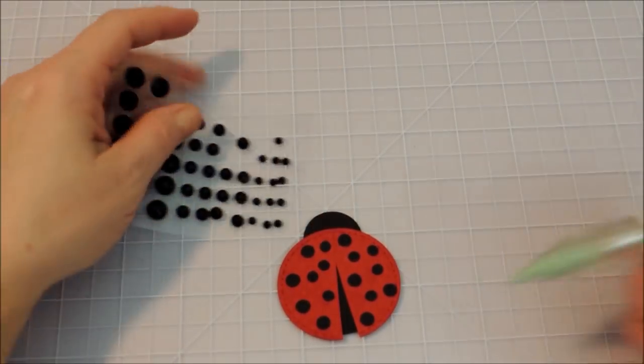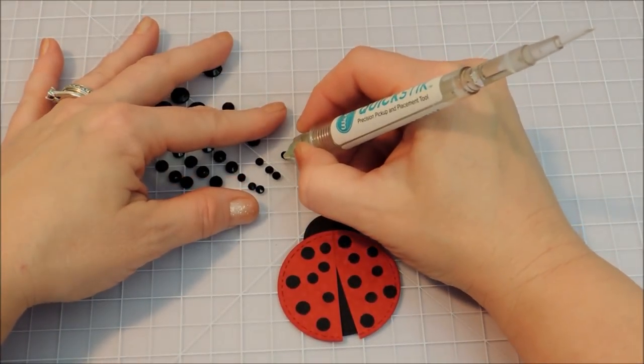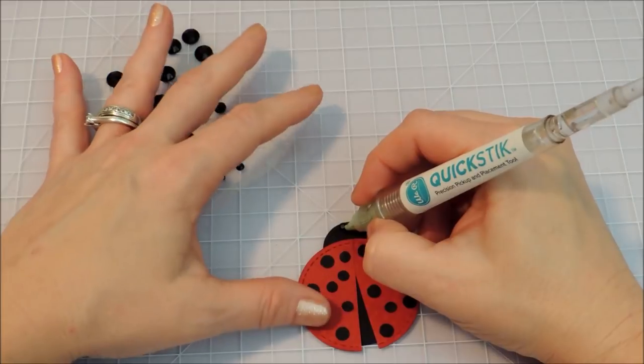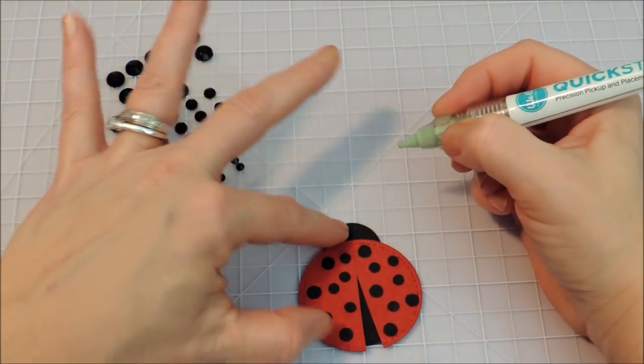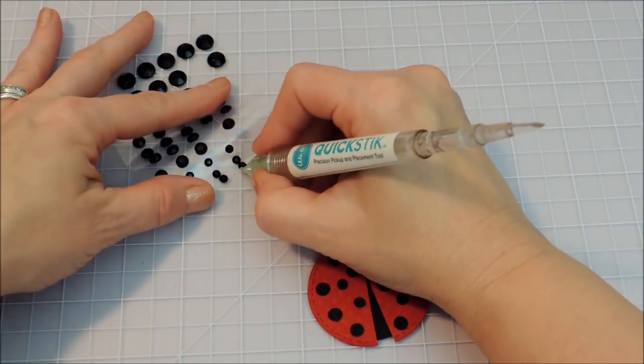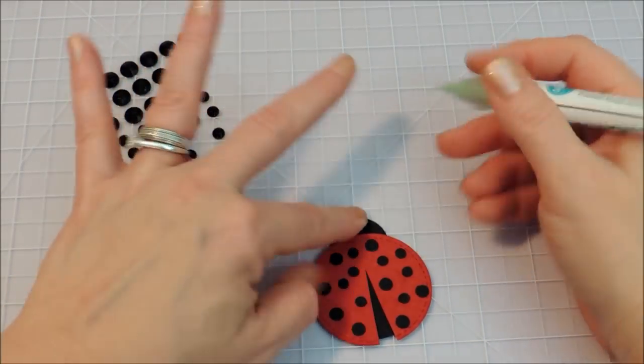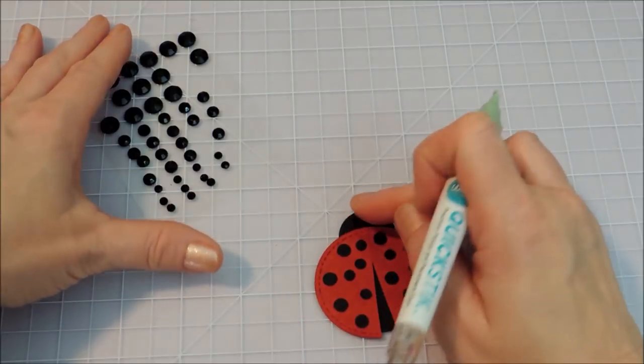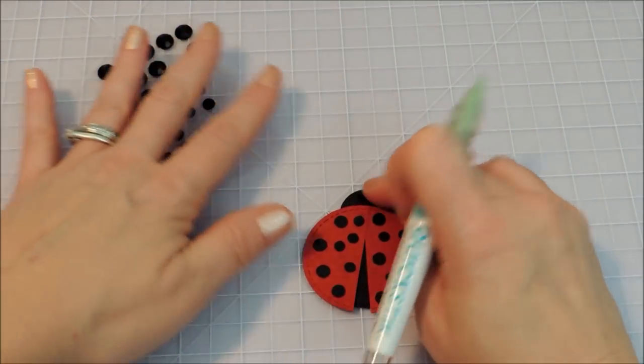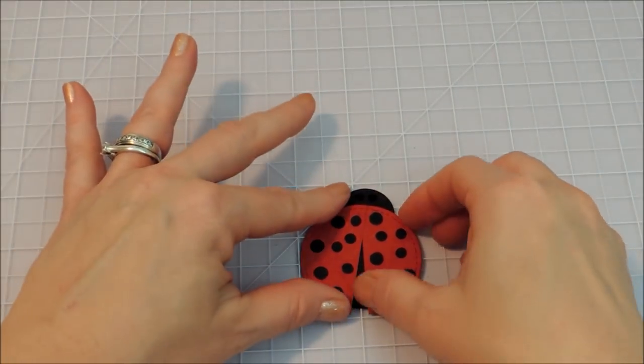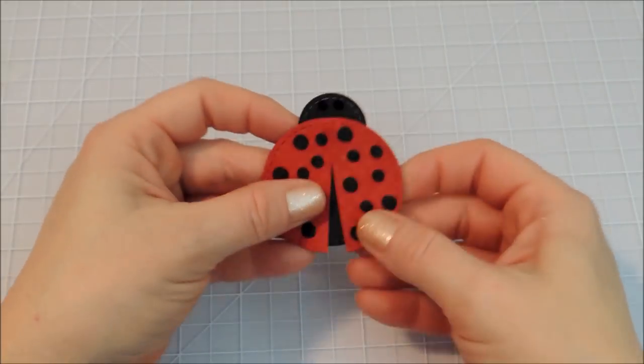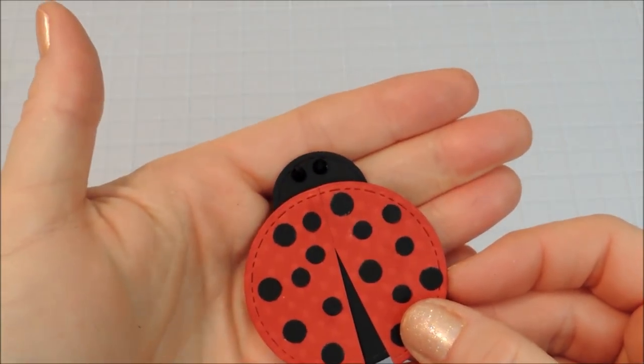And the last thing we need is two little black jewels for eyes on our ladybug. And they are black on black. They don't stand out much but that's true on real ladybugs. So I think it looks nice that way.